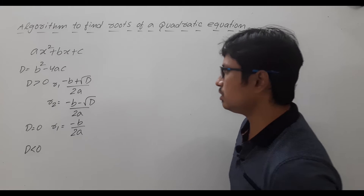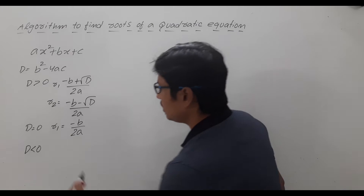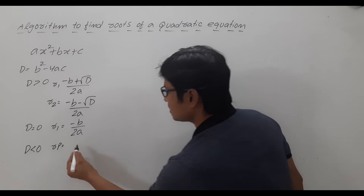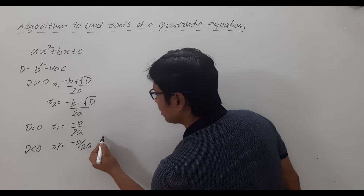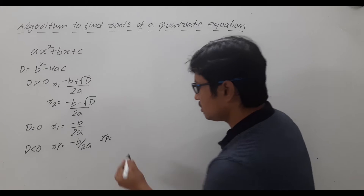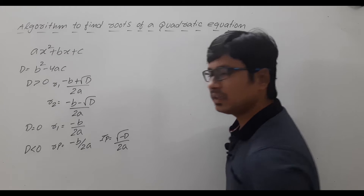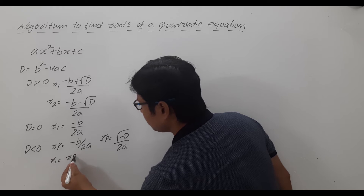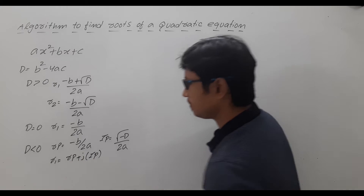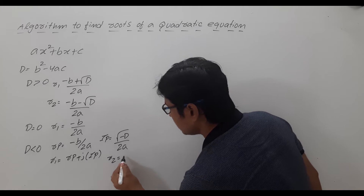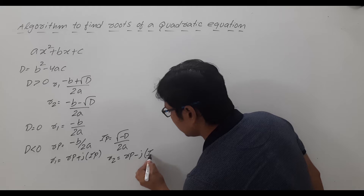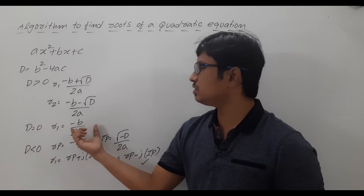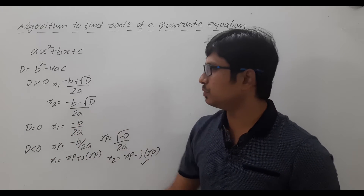If the discriminant is less than 0, then I will have imaginary roots. First I compute the real part, which is −b / 2a, and the imaginary part, which is √(−d) / 2a. Then I write root 1 as rp + j·ip and root 2 as rp − j·ip. So these are the two roots when d < 0.